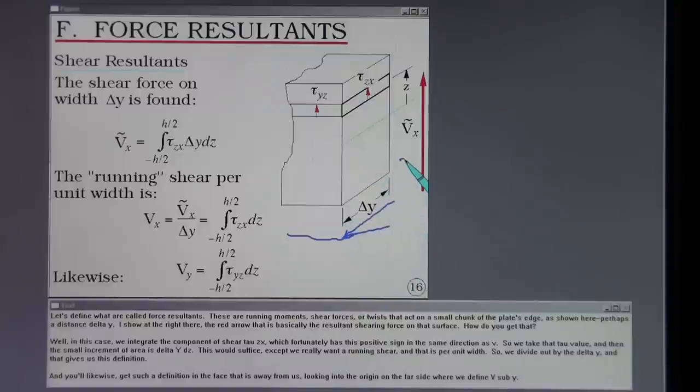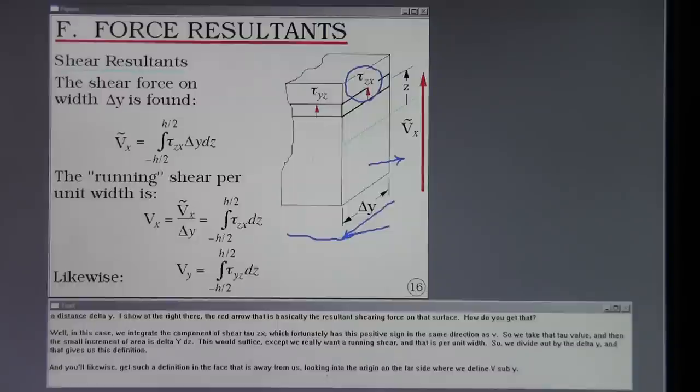How do you get that? Well in this case we integrate the component of shear tau Zx which fortunately has this positive sign in the same direction as V. So we take that tau value and then the small increment of area is delta Y dz. This would suffice except we really want a running shear and that is per unit width. So we divide out by the delta Y and that gives us this definition. And you'll likewise get such a definition in the face that is away from us looking into the origin on the far side where we define Vy.